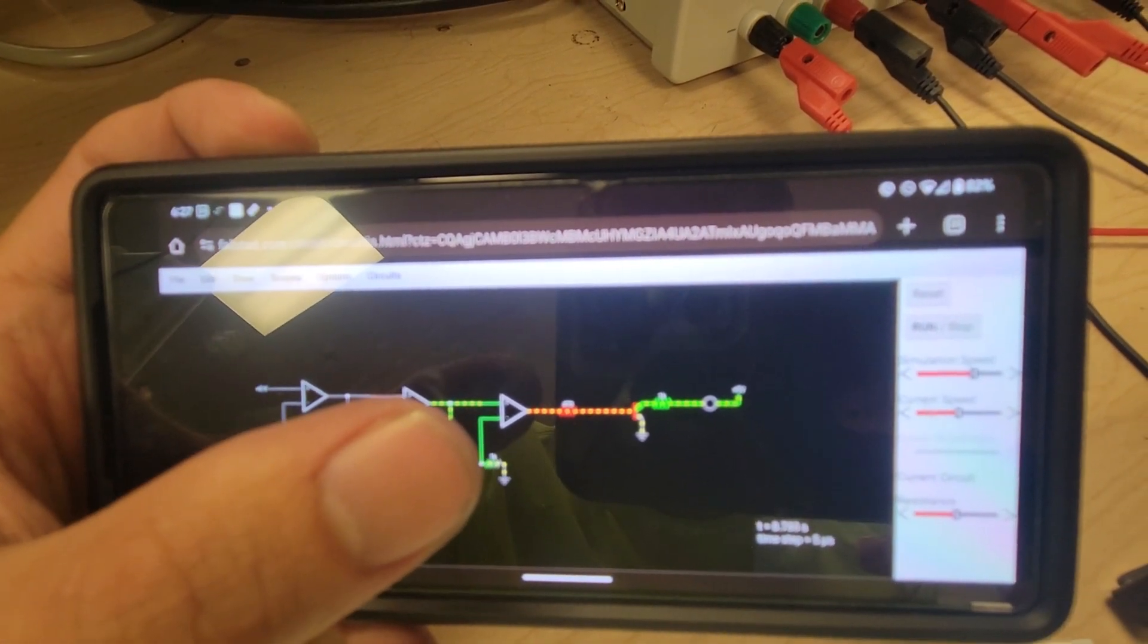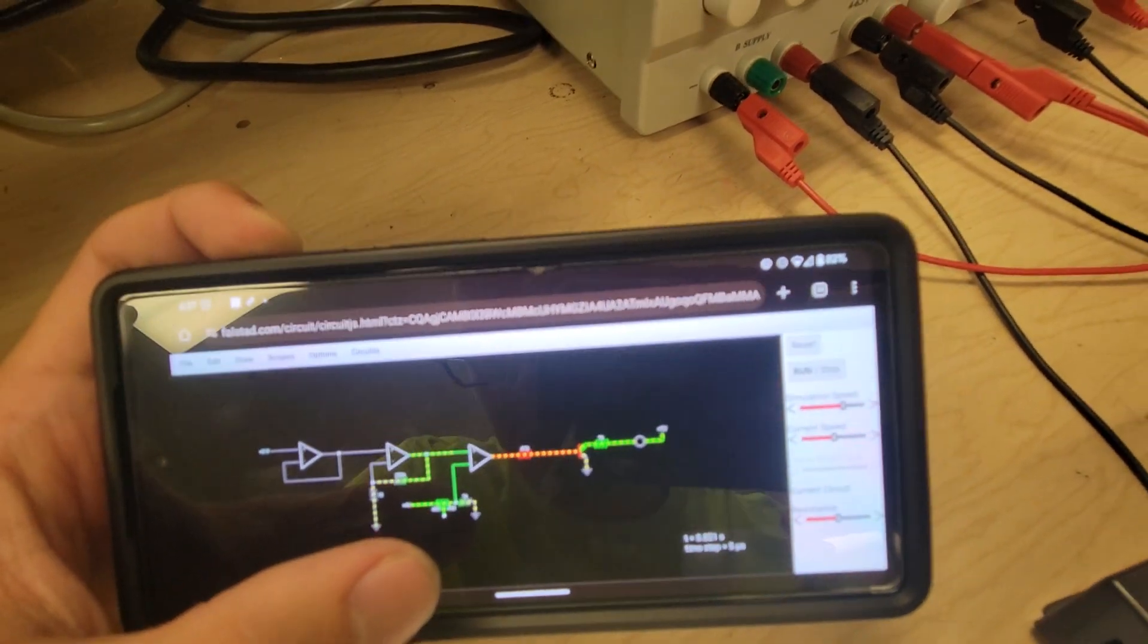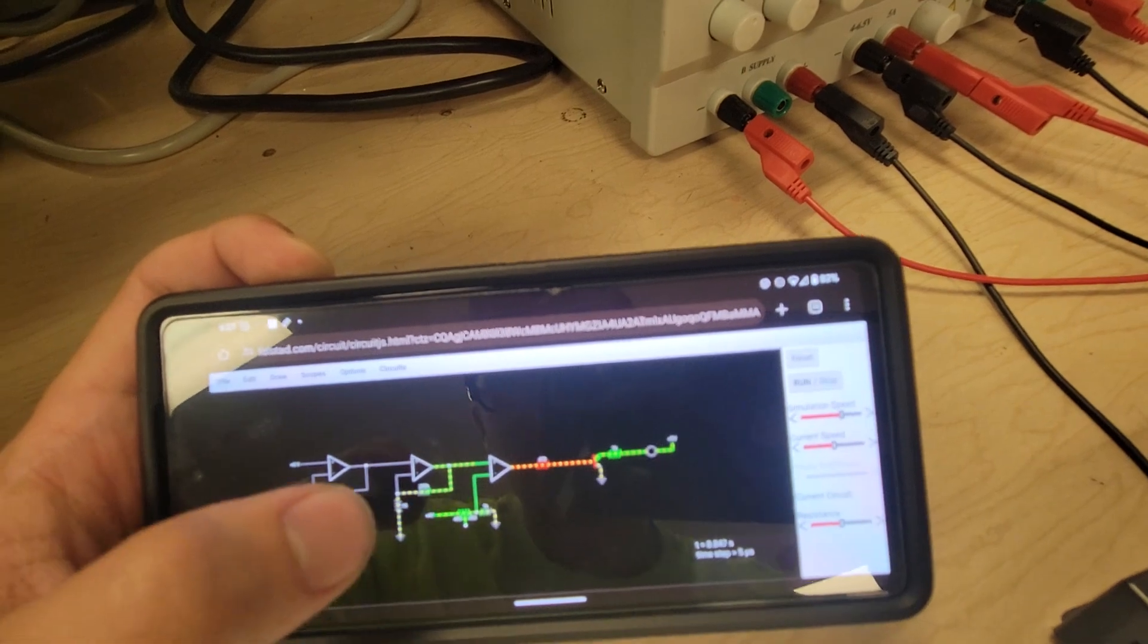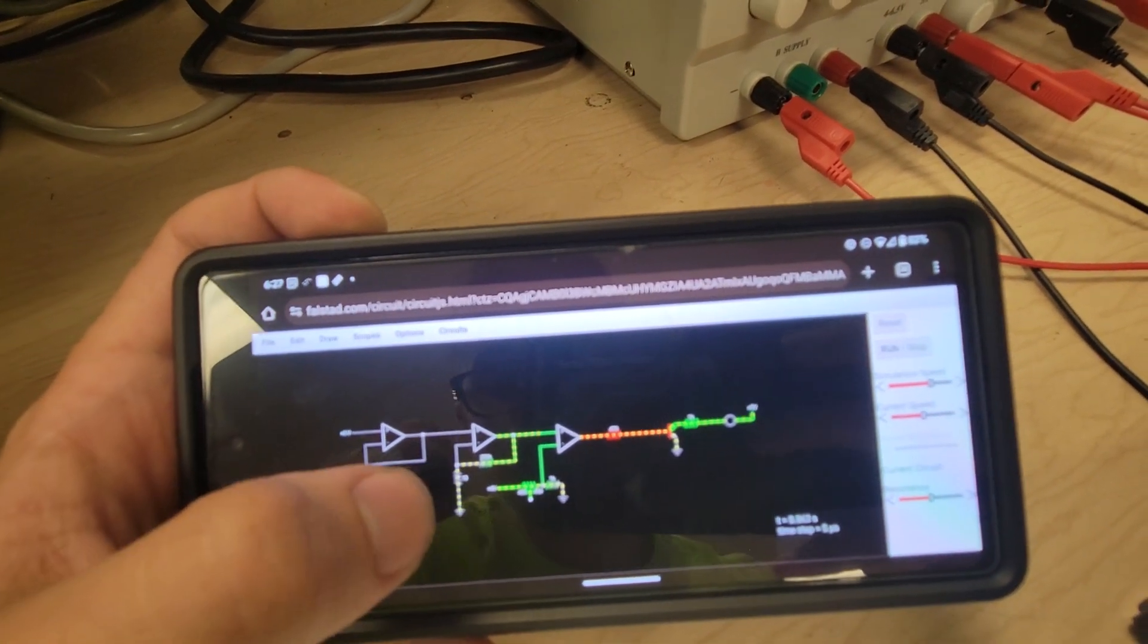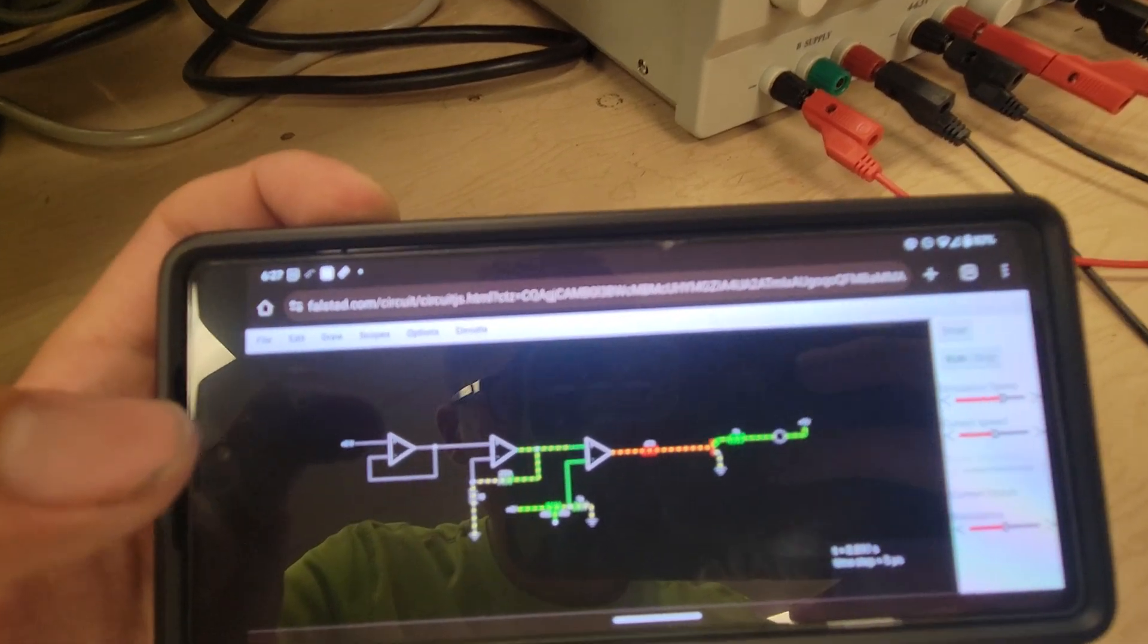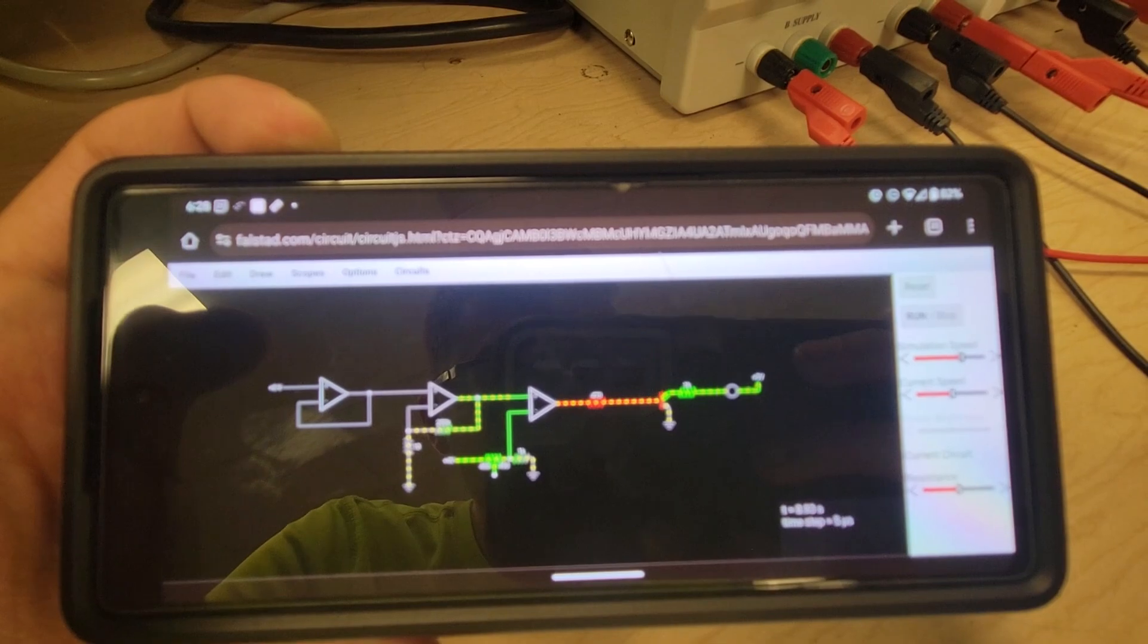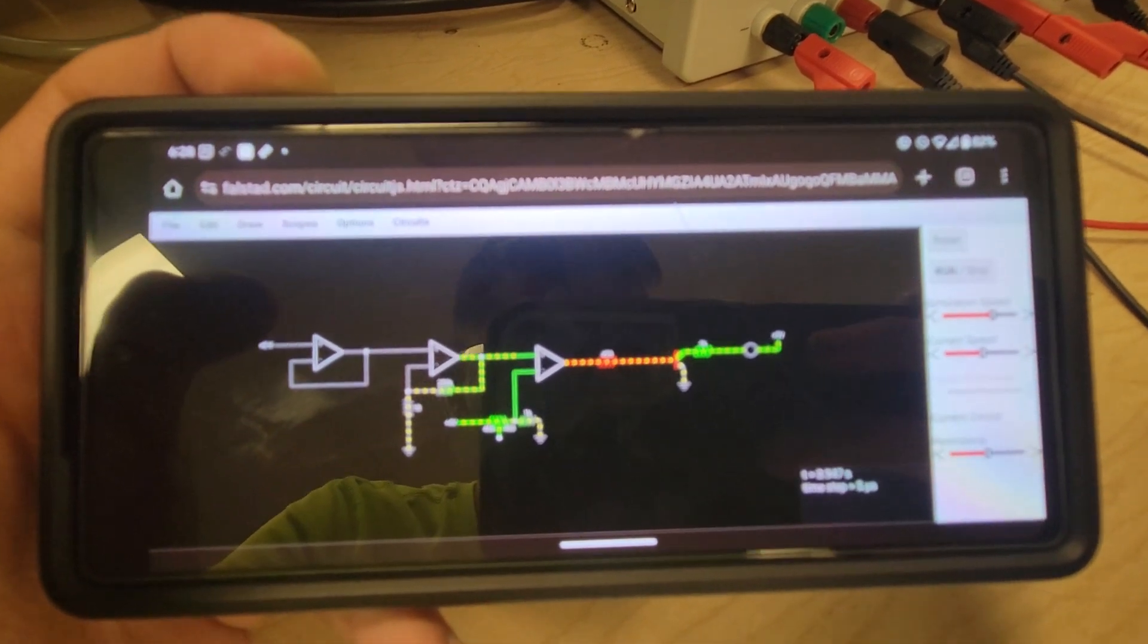And then our comparator is here. Helping with the comparison is a resistor, a potentiometer here. Oh yeah, the potentiometer, so it makes a voltage divider. Yes. For the inverting input.